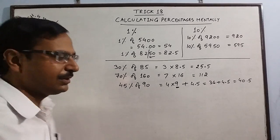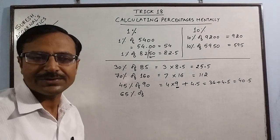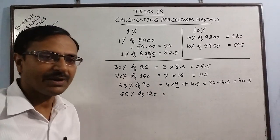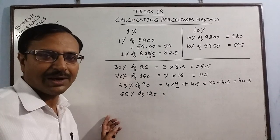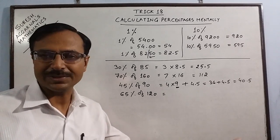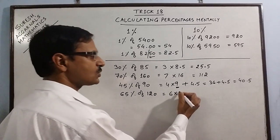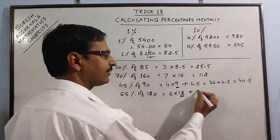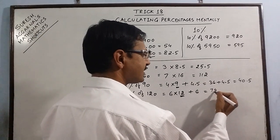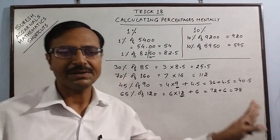Yet another example. Say we have to calculate 65% of any particular quantity, 120. Now I don't see 65% as 65%, I see it as 6 into 10% plus 5%. So 6 into 10% of this is 12, plus reduce this to half, 6. So 72 plus 6 is 78. 65% of 120 is 78.